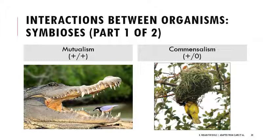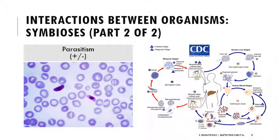Commensalism is when one individual benefits and the other is not affected at all. For example, a bird building its nest on a tree — the tree is not affected in any way, but the bird benefits from having that space. Parasitism is when one individual benefits and the other suffers, not generally enough to cause immediate death, but with serious long-term health effects. An example is malaria, which is caused by a protozoan called Plasmodium, spread through mosquitoes. It causes serious problems worldwide — affecting your liver, bloodstream, and many other systems — and can be extremely dangerous.